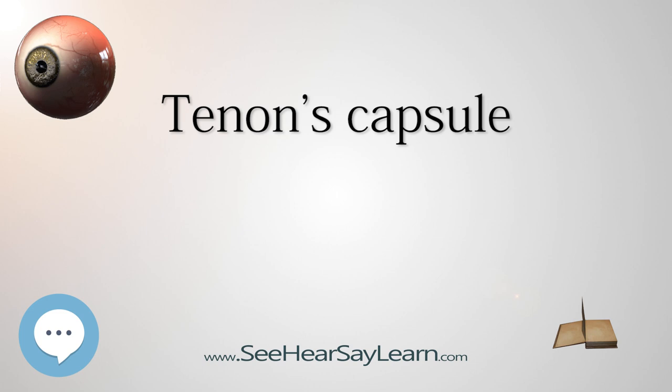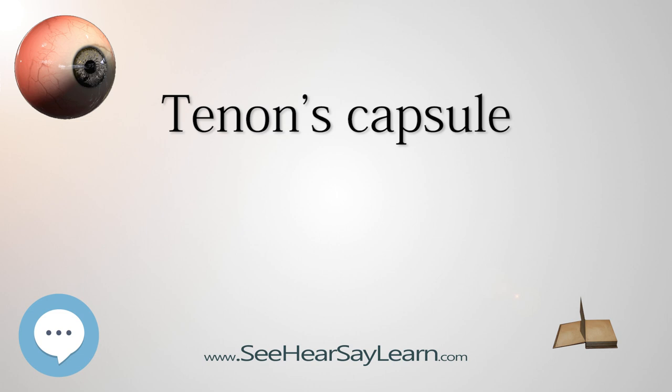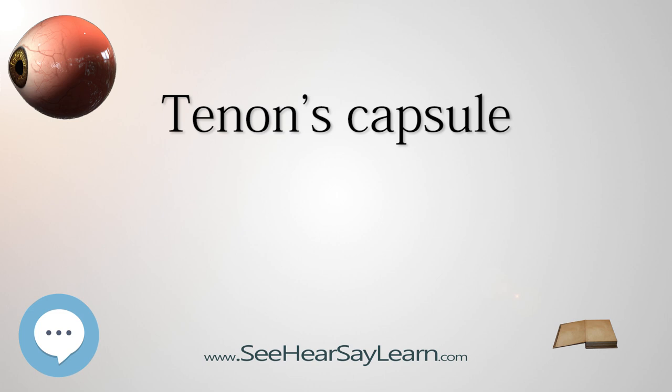Local Anesthesia: Local anesthetic may be instilled into the space between Tenon's capsule and the sclera to provide anesthesia for eye surgery, principally cataract surgery. After applying local anesthetic drops to anaesthetise the conjunctiva, a small fold of conjunctiva is lifted off the eyeball and an incision made. A blunt curved cannula is passed through the incision into the periscleral lymph space and a volume of local anesthetic solution is instilled. The advantages are a reduced risk of bleeding and of penetration of the globe, compared to peribulbar and retrobulbar approaches.